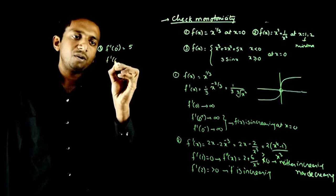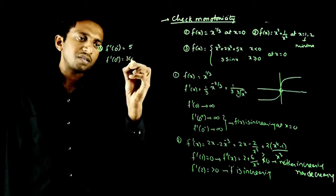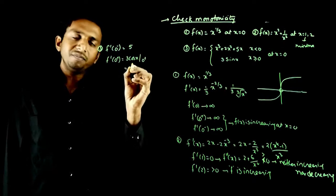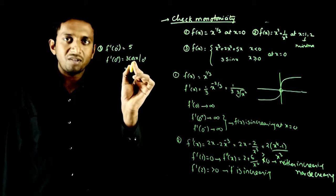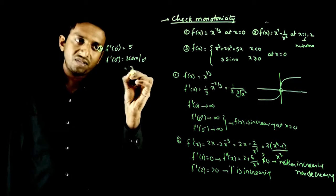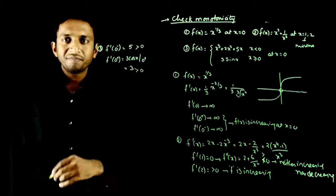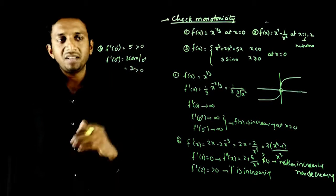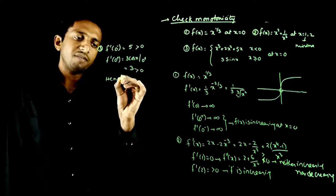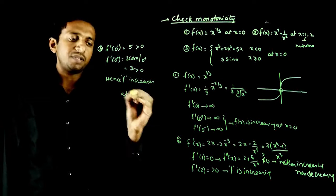f'(0⁺): differentiate 3 sin x to get 3 cos x, evaluated at 0⁺. cos 0 = 1, so f'(0⁺) = 3 > 0. Both the left-side and right-side derivatives are greater than 0, meaning right side is increasing and left side is also increasing. Hence, f increases at x = 0.